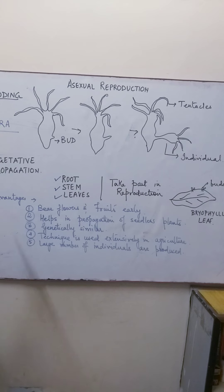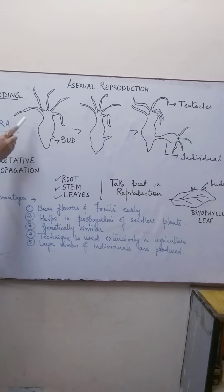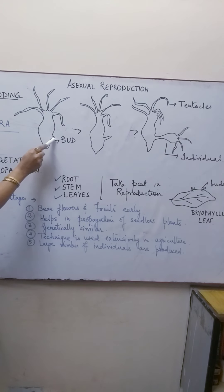After a certain period of growth, the bud will acquire all the necessary parts and structures required to exist as an independent individual. After it has attained the desirable size or properties, it will detach from the parental body and will exist as a new individual, while the parent will also continue to exist. In the case of hydra, these are the tentacles, and this is a mature hydra which has started developing the bud.